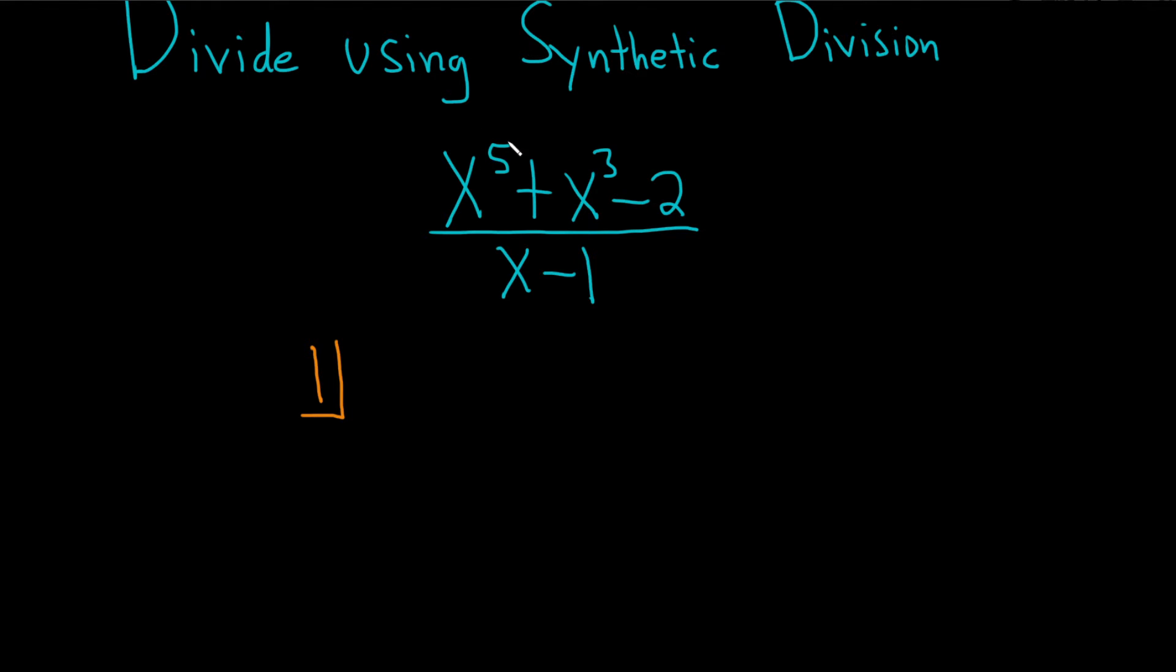This is really x to the fifth plus 0x to the fourth plus x cubed plus 0x squared plus 0x plus 2. So we're missing powers of x. So basically you want to fill them in with zeros, right?